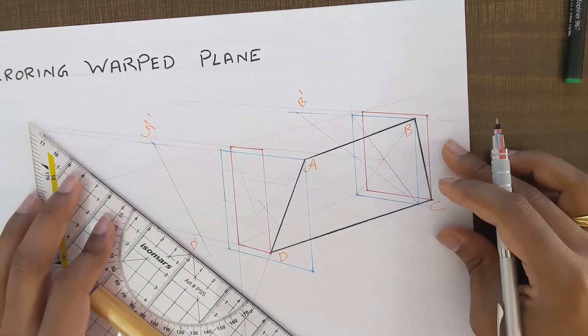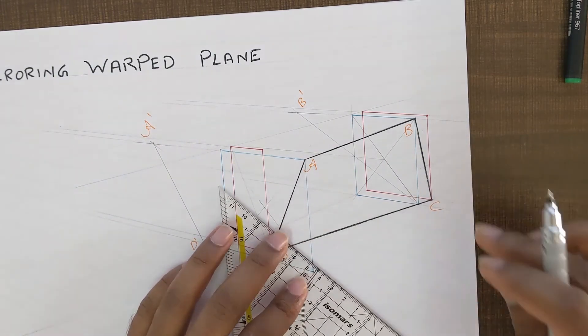So if we just extend the top edge of the sand color rectangle, this gives us B dash. And let us go ahead and do the same thing for the point C as well.